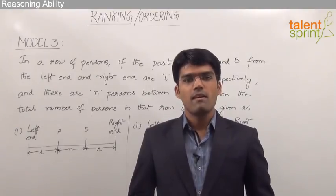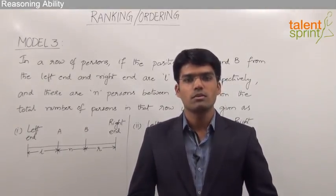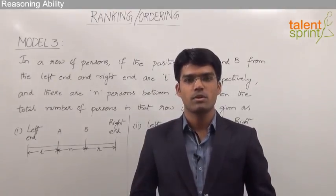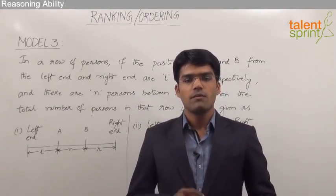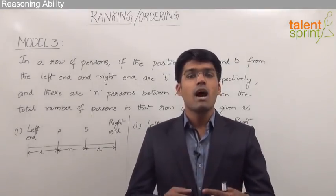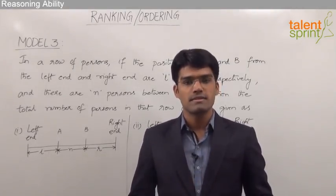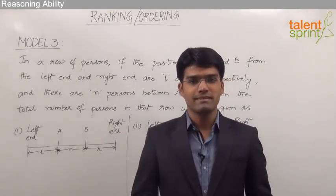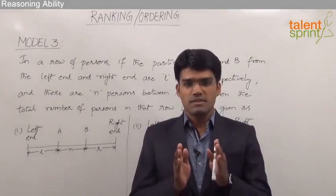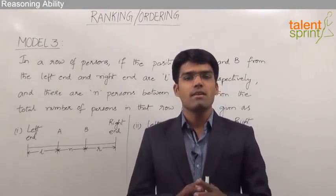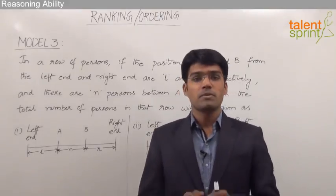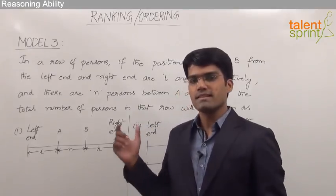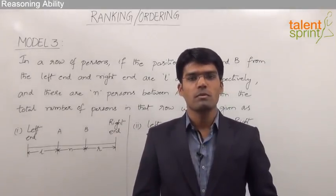Let us now discuss Model 3, where we are supposed to find out the total number of persons in a row when the positions of two persons from two different ends are given. If you remember, in Model 1 we learned how to find the total number of persons in a row. The difference between Model 1 and Model 3 is that in Model 1, the positions of the same person from two different ends were given, but here the positions of two different persons from two different ends will be specified.